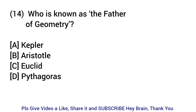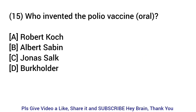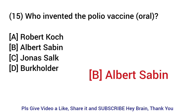Who is known as the father of geometry? Answer: Euclid. Who invented the polio vaccine? Answer: Albert Sabin.